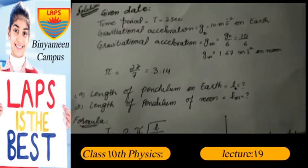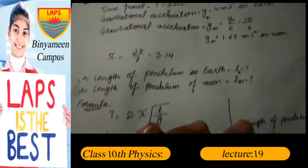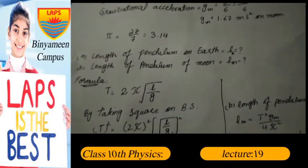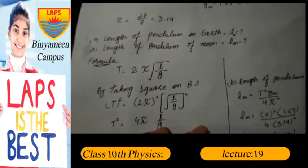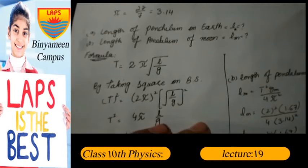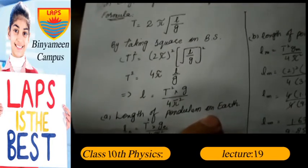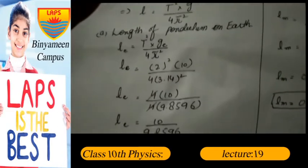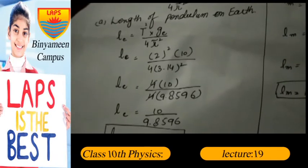Find the length of the pendulum on Earth and on the Moon. We use the formula T = 2π√(l/g). Taking the square on both sides: T² = 4π²l/g. Deriving the value of l from this formula, we get l = T²g / (4π²). So the length of the pendulum on Earth: l_e = T² × g_e / (4π²).